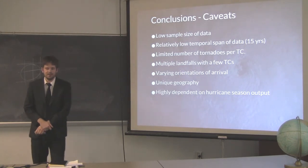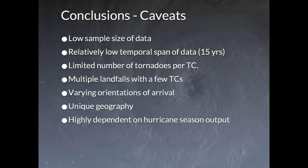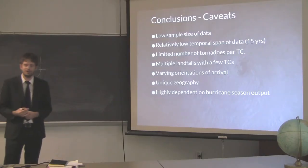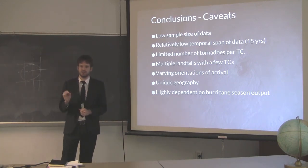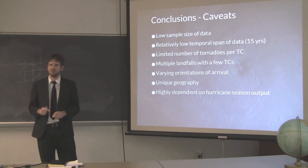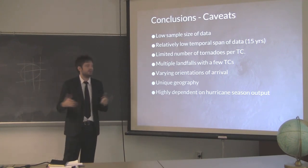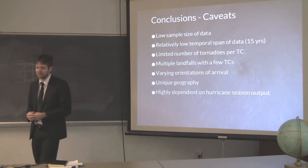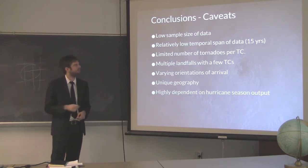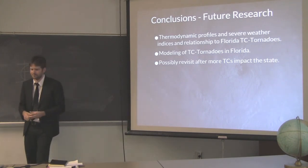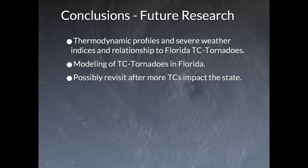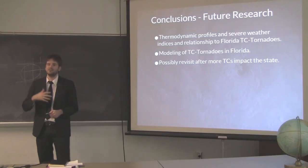There are several caveats: low sample size and a relatively short 15-year temporal span of data with limited TC tornado counts, making storm-specific analysis difficult. Some TCs had multiple landfalls, introducing subjectivity in determining which landfall to associate with each tornado. The unique geography of Florida and high dependence on hurricane season output are also limitations. Future research should consider investigating thermodynamic profiles and real indices in relation to this phenomenon, modeling TC tornadoes in Florida, and possibly revisiting this after more storms occur in the state.